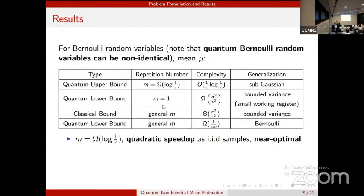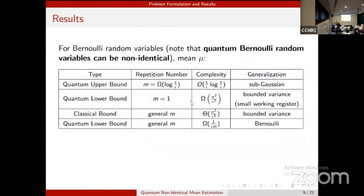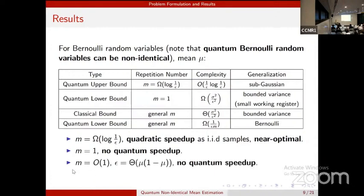For the m equals 1 case — where we are allowed to query each different quantum random variable only once — we have a quantum lower bound of Omega(sigma squared / epsilon squared). Compared with the classical bound, for this m=1 case, we can achieve no quantum speedup. We also have another quantum lower bound for general m: Omega(1/(epsilon·m)). From this, we conclude that for constant m and epsilon not very large or small, we can also achieve no quantum speedup.